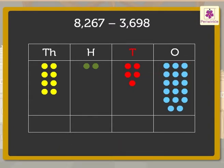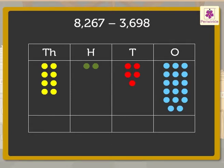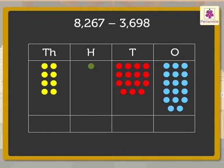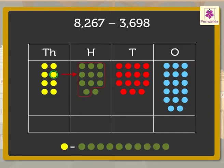Now, in the tens column, there are only 5 red dots left and we need to cancel 9 red dots. We cannot subtract 9 from 5. So, we regroup 100 to 10 tens. The hundreds column has only 1 green dot left and we need to cancel 6 green dots. We cannot subtract 6 from 1. So, we regroup 1,000 to 10 hundreds.